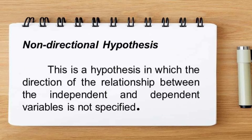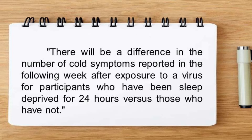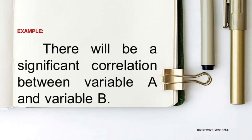A non-directional hypothesis is one in which the direction of the relationship between the independent and dependent variables is not specified. It merely indicates that there will be a difference between the two groups or conditions, but does not specify whether the difference will be greater or smaller, faster or slower. For example: there will be a difference in the number of cold symptoms reported in the following week after exposure to a virus for participants who have been sleep-deprived for 24 hours versus those who have not. When the study is correlational, we simply say that variables will be associated but not whether the connection will be positive or negative. For example: there will be a significant correlation between variable A and variable B.